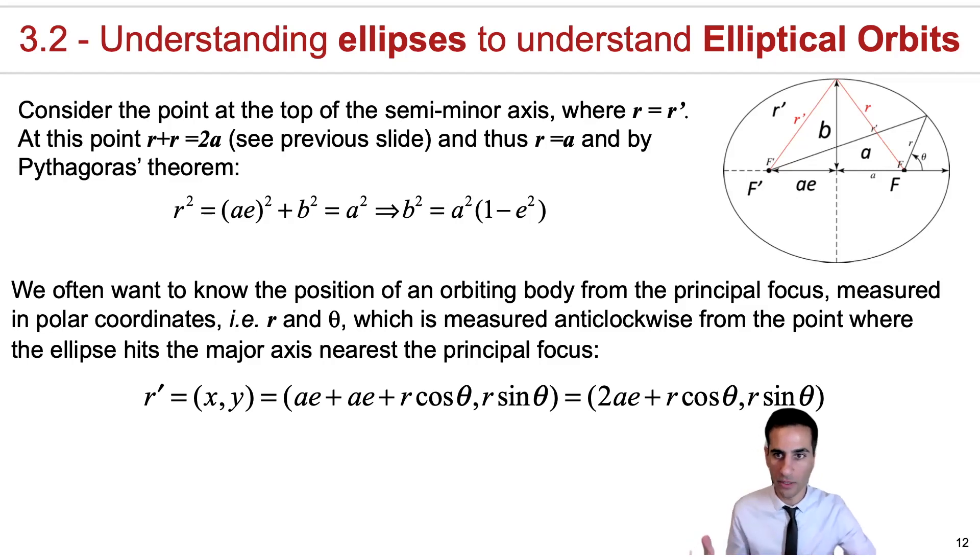So the question is, how do we do it in practice? All you have to do is let's start trying to define this r prime in terms of x and y. You can very easily read from looking at the diagram that the x coordinate is simply given by ae plus r cos theta.